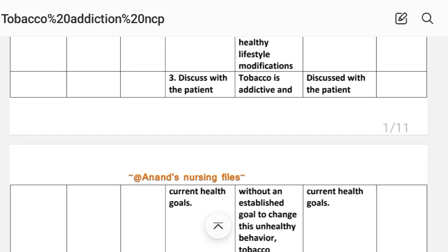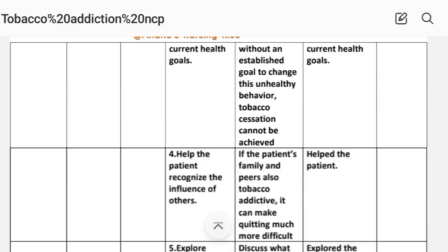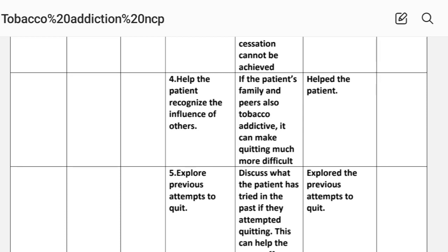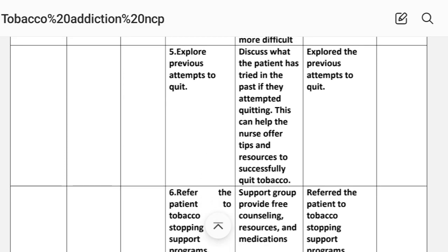Rationale: without an established goal to change this unhealthy behavior, tobacco cessation cannot be achieved. Implementation: discussed with the patient current health goal. Number four: help the patient recognize the influence of others. Rationale: if the patient's family and peers are also tobacco addicted, it can make quitting much more difficult. Implementation: help the patient.